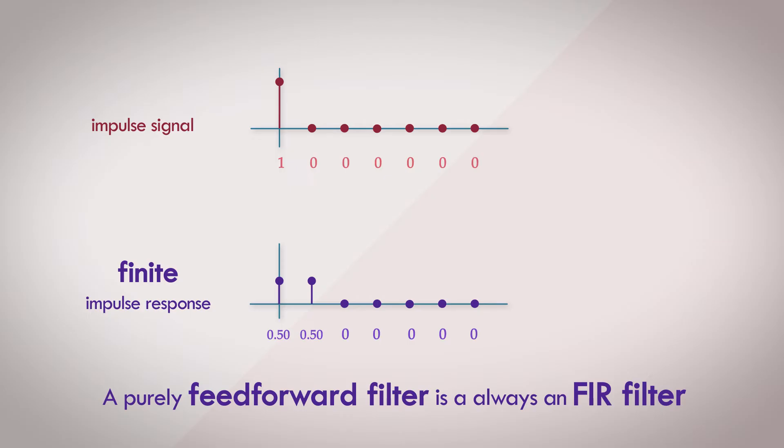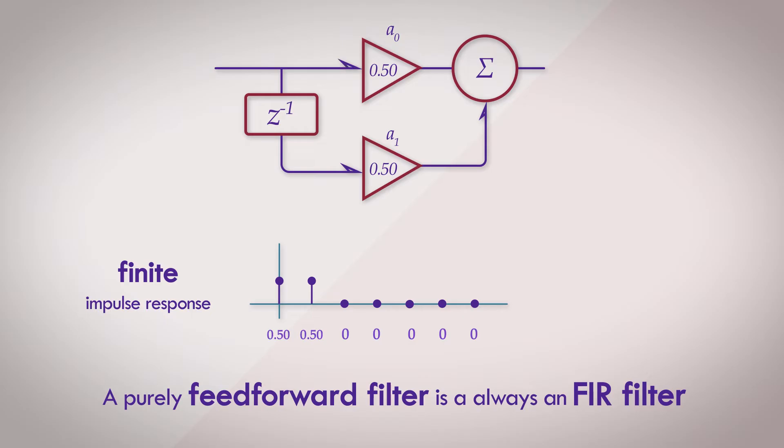Another interesting and bizarre observation that you might make is that the two non-zero values are identical to our pair of filter coefficients a0 and a1. This is not a coincidence. For a feedforward type filter, the non-zero values of the impulse response are identical to the filter coefficients. The more you think about it, the more it makes sense.